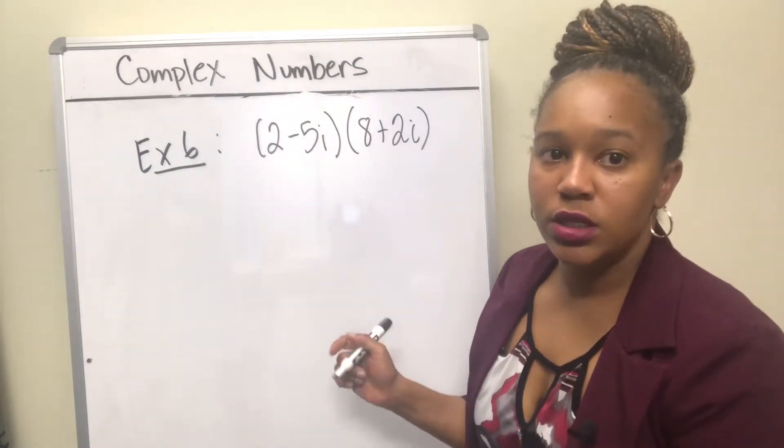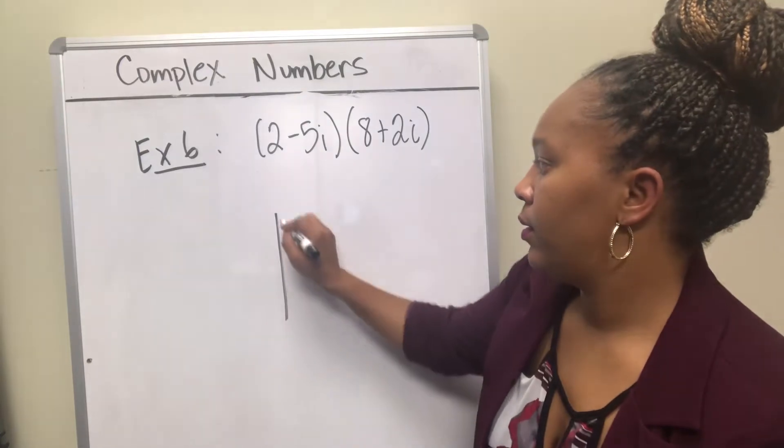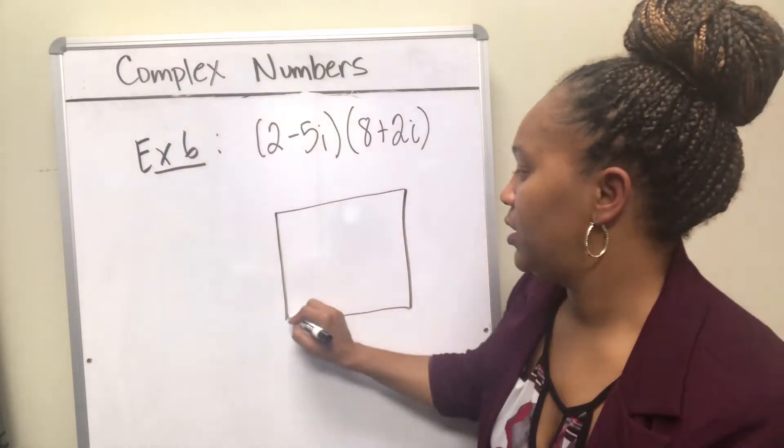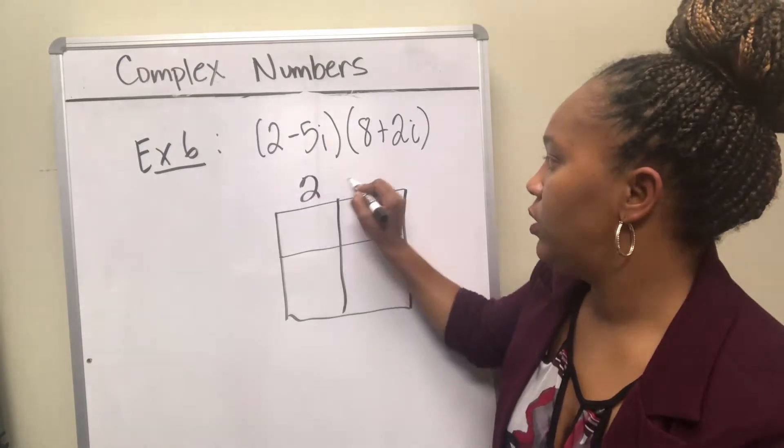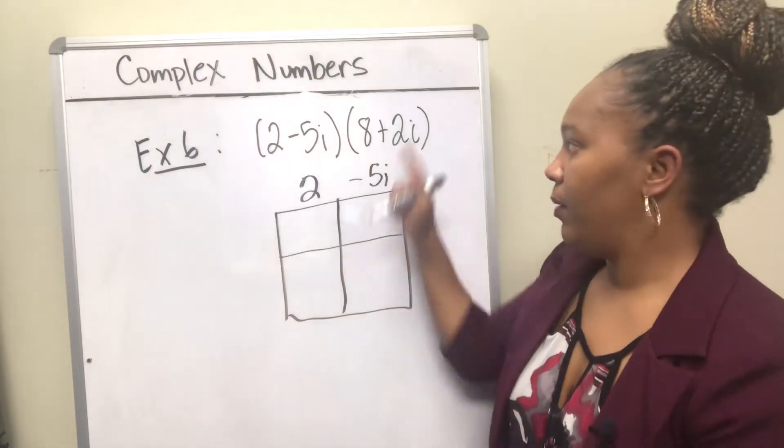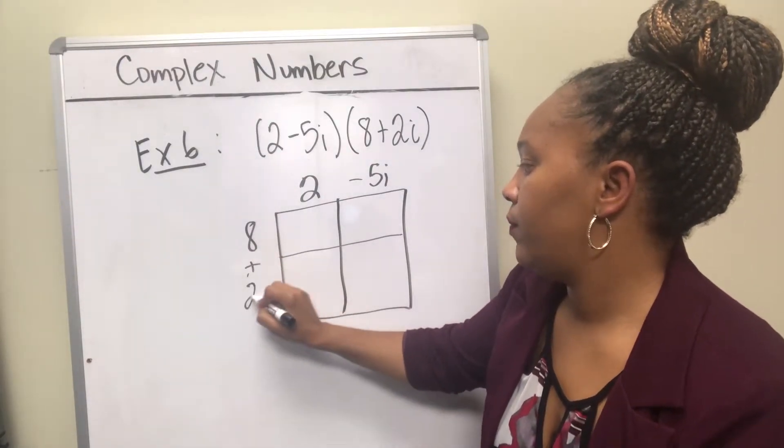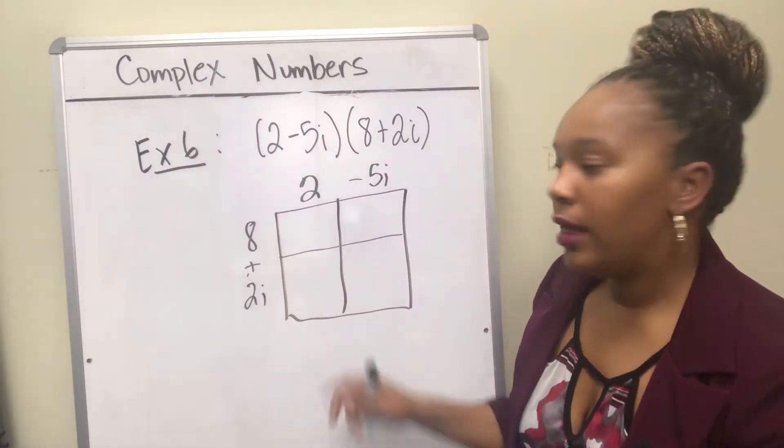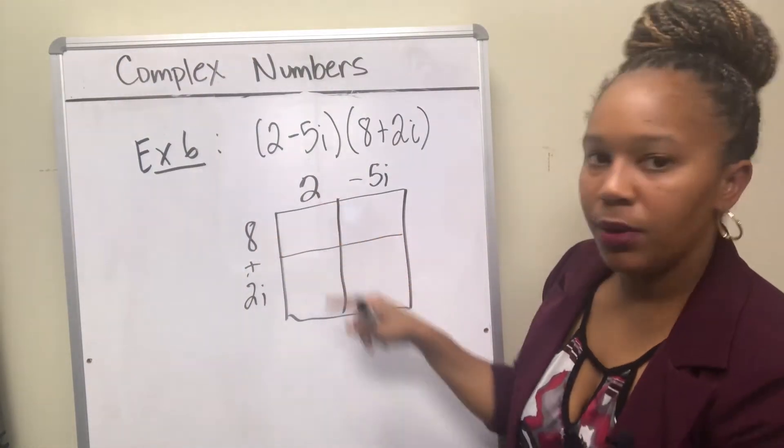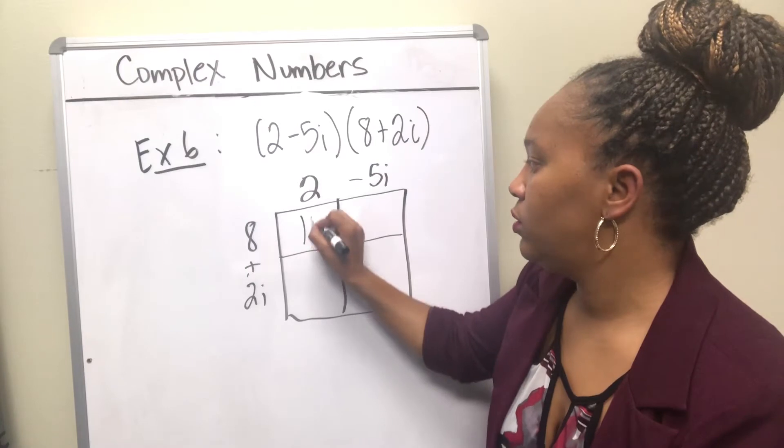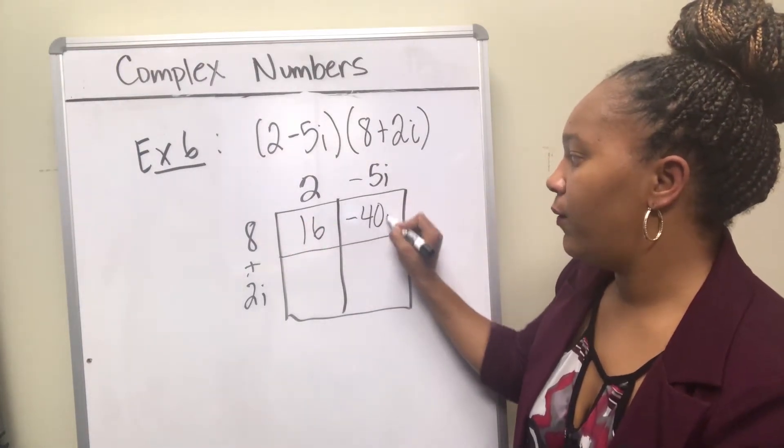Another way you can do this is some people like to multiply using the box method. The box method includes setting up a box where you have each term. So the 2 minus 5i on the top and then the other expression, the 8 plus 2i along the side. And then in each box, you multiply the number to the left and the number on top. So 8 times 2 is 16, 8 times negative 5i is negative 40i.